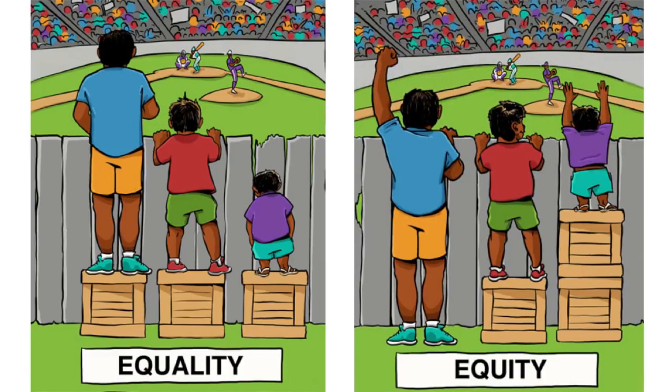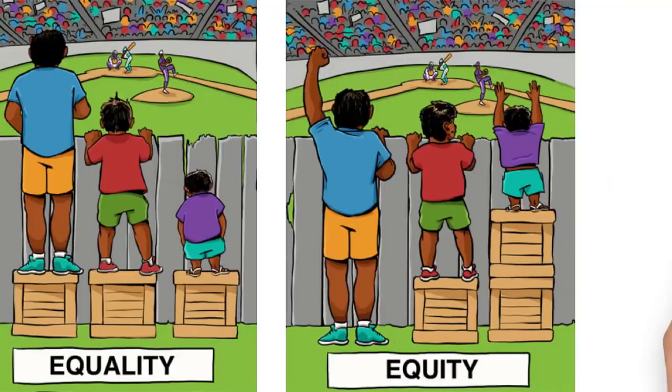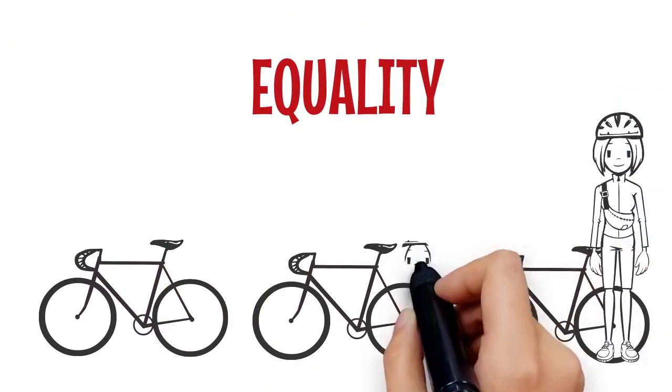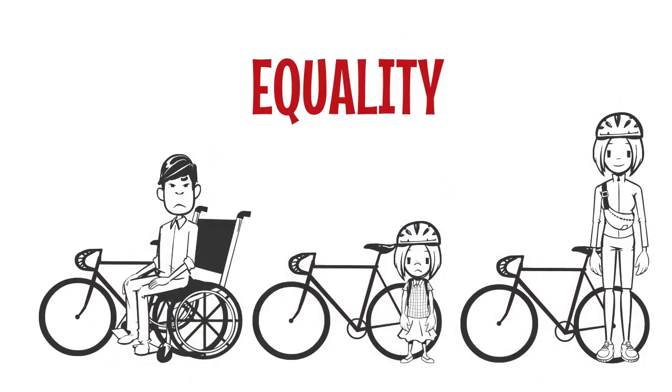Similarly, equality is giving equal bicycles—the same bicycle to different students irrespective of their needs. But equity is: if there are three students with three different kinds of needs, they should be provided with the facility which is more convenient to them.